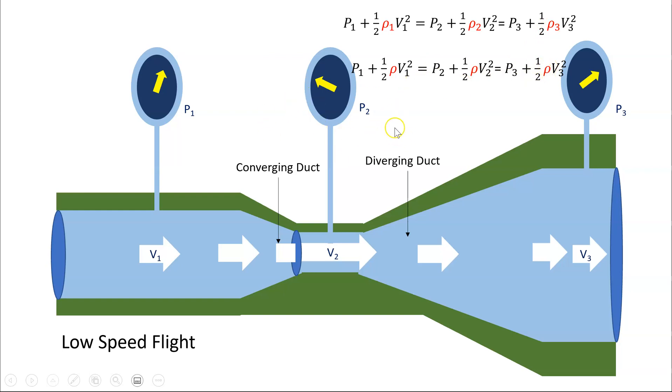So we can see then, that if this is constant, then if the velocity increases, there will be a decrease in pressure. So in our example here, the velocity is coming in, it speeds up as it's going through the throat of the venturi. Because of this, there's a decrease in pressure.